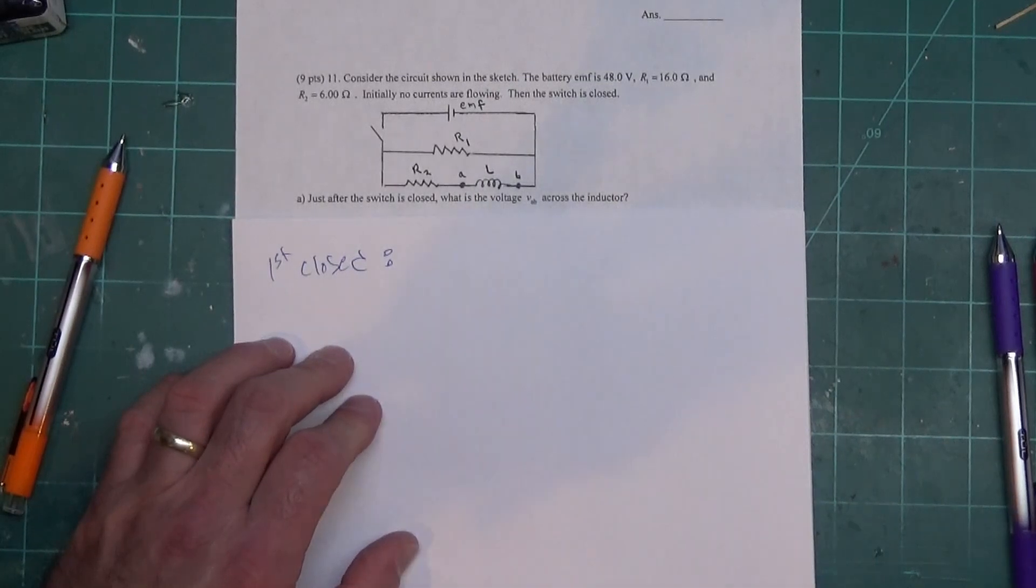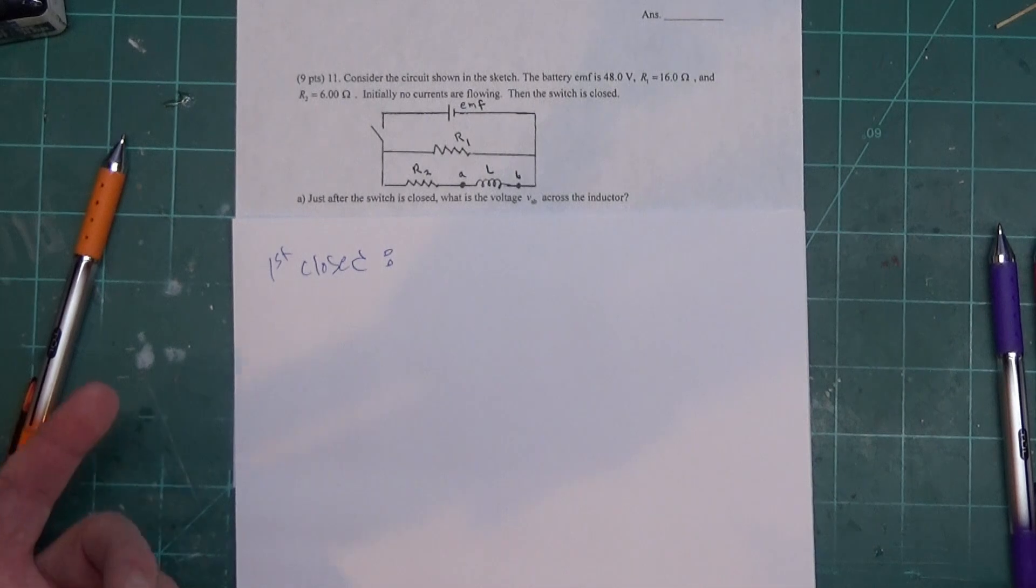Hello everyone, we are going to work through this problem right here. This problem has both an inductor and a resistor in it. Now an inductor behaves somewhat like a capacitor. Its job is to store energy in a magnetic field.